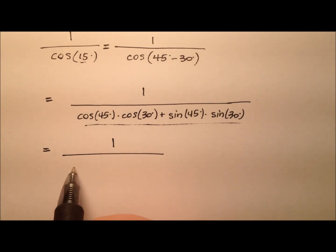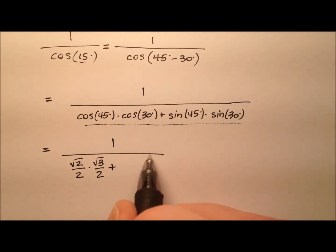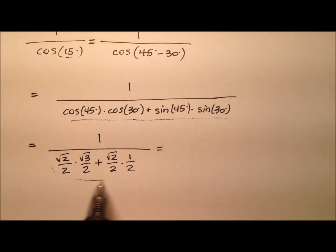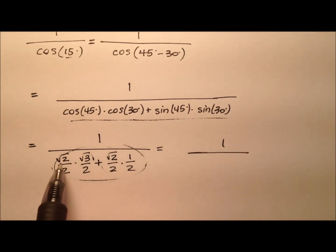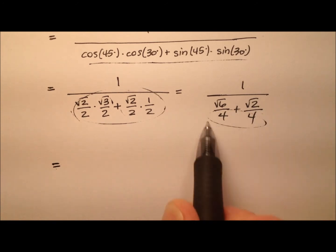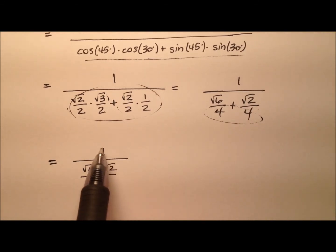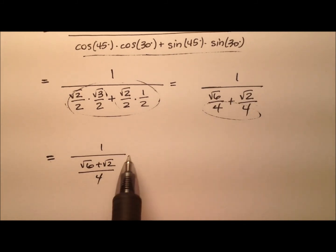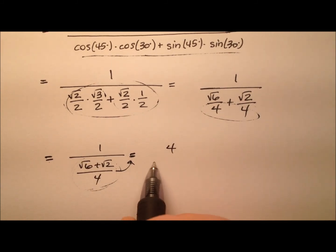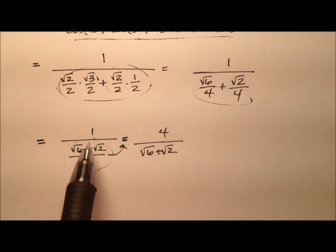So we have 1 over: the cosine of 45 is √2/2, the cosine of 30 is √3/2, plus the sine of 45 which is √2/2, and the sine of 30 is 1/2. Simplifying those products gives us 1 over (√6/4 + √2/4), which we can rewrite over a single denominator as 1 over (√6 + √2) all over 4. Taking the reciprocal of that denominator, we get 4 over (√6 + √2).